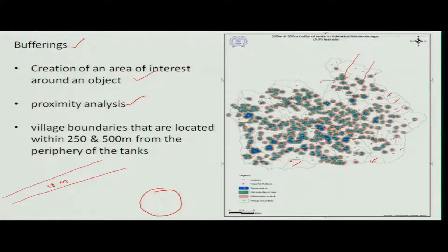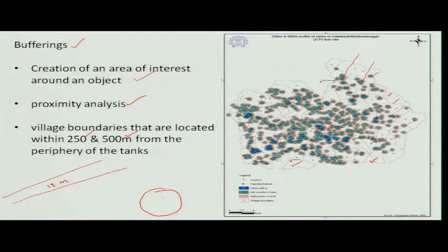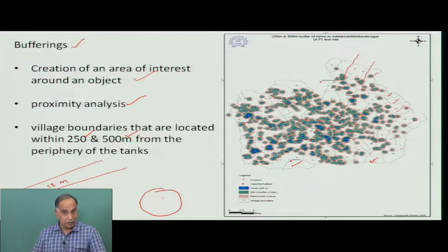I have applied buffer distances of 200 meters as well as 500 meters from the lake periphery outward. This indicates that if people walk around 200 to 500 meters, they will be able to reach a water source for drinking purposes. This type of buffering analysis is possible using the basic layers of GIS.